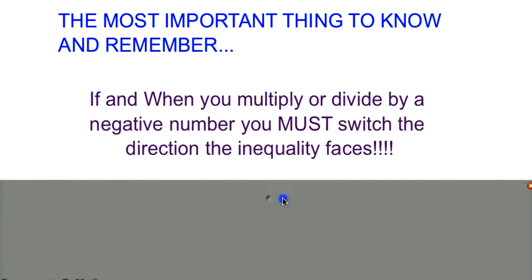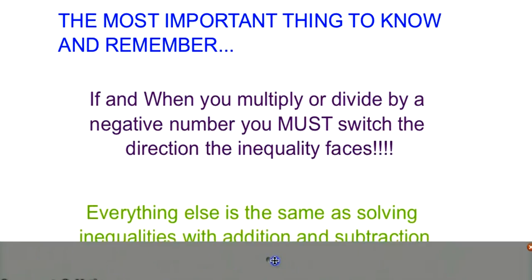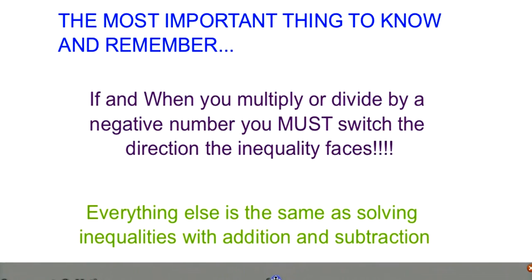If and when you multiply or divide by a negative number, you must switch the direction of the inequality — you need to flip your inequality sign over. Everything else is the same as solving inequalities with addition and subtraction.